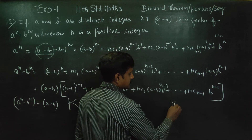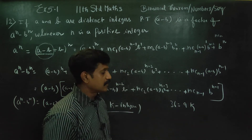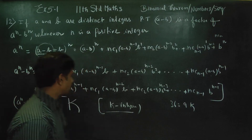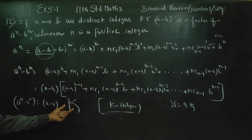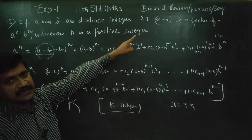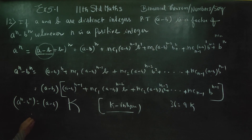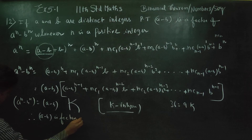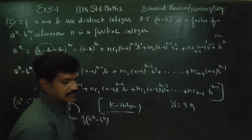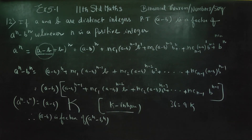For example, 36 is equal to 9K — 36 is divisible by 9, that is the meaning. If it is a multiple of K, then A power N minus B power N is divisible by A minus B — that is a factor. A minus B is a factor. Divisible by A minus B means A minus B is a factor. Therefore, A minus B is a factor of A power N minus B power N. Factor means it divides.